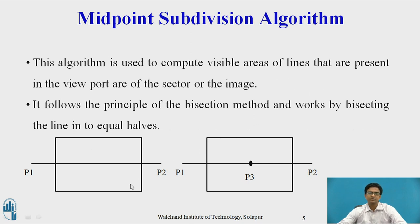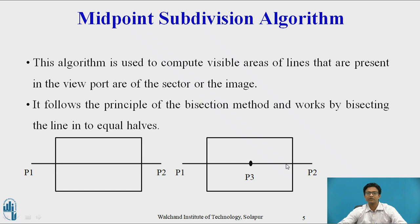In this example you can see: this is the window edge and line segment P1P2, and at every step we divide this line segment into equal halves. We get P1P3 and P3P2; again P1P3 is divided into two equal halves, and again P3P2 is divided into two equal halves. In this way we divide the line segment into two equal halves and find which segments lie inside or outside the window — that is, we apply the Visibility Test.